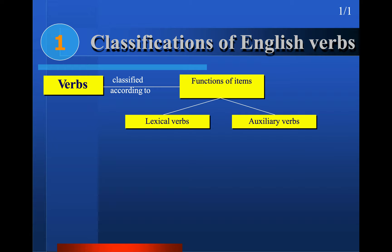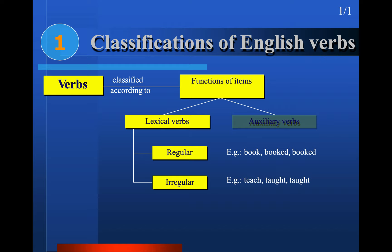We classified verbs according to functions of the item, into lexical verbs and auxiliaries. In lexical verbs we have two kinds: regular verbs and irregular verbs. Regular verbs are regularly changed into past and past participle, while irregular verbs have no rule when we change them into past and past participle.